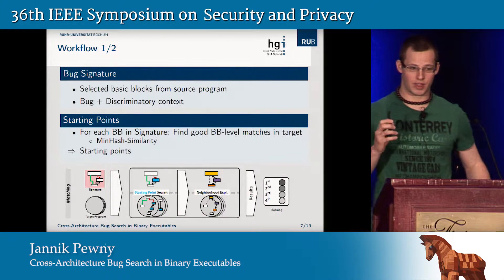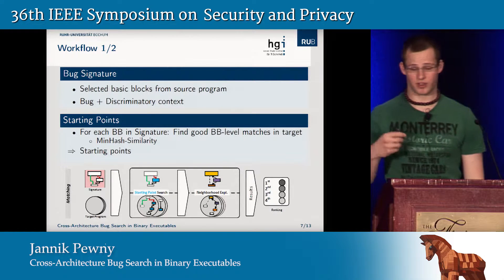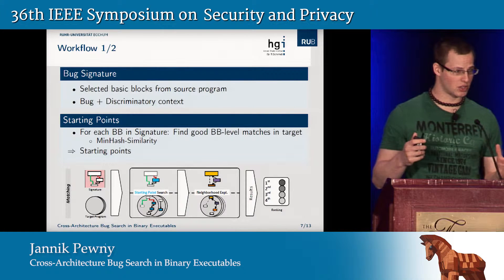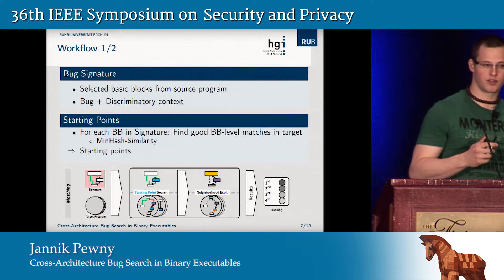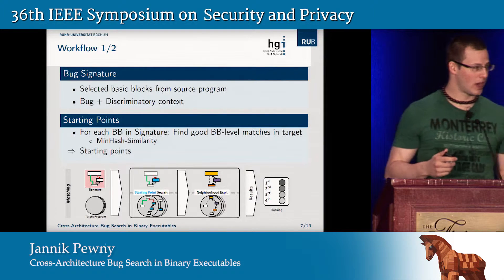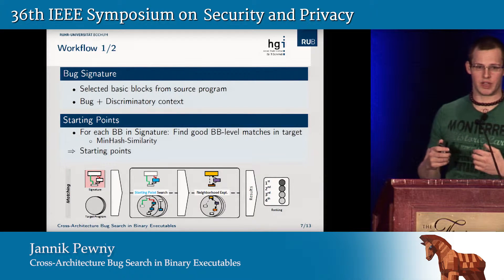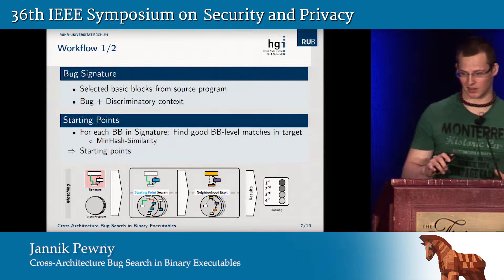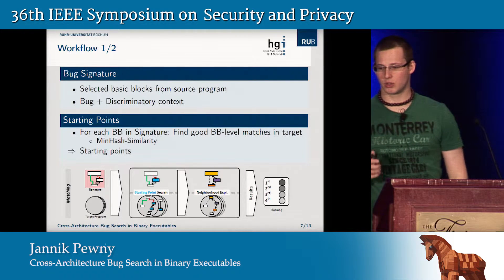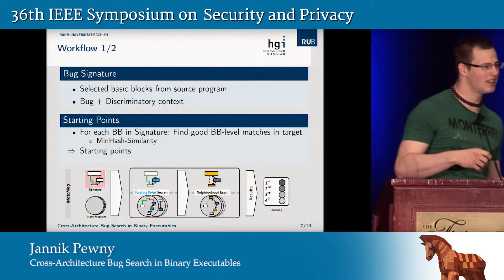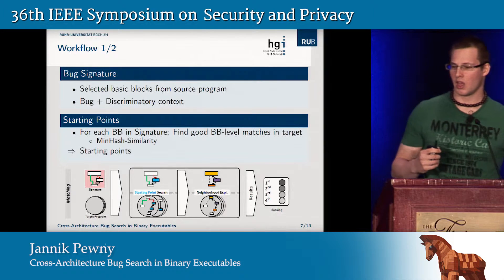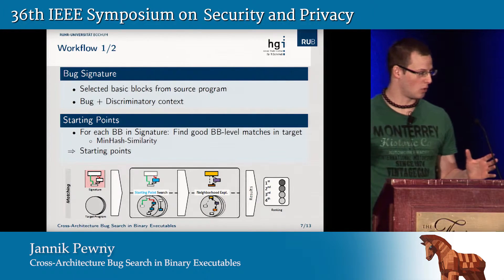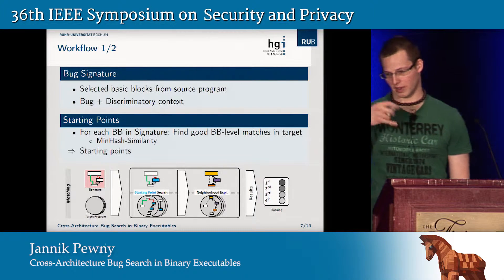Now we can go to how to actually find a bug. We start off with a bug signature. In our case, a bug signature — which is just a catchy label we needed — is just a piece of code. It is not as abstracted as, for example, a glorified regex in network intrusion detection systems. It's just a piece of code. A bug signature should contain the bug and a little bit of discriminatory context, but it's not structurally different from the target program we search in.